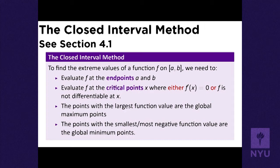Let's remember the methods we have for doing these things. In section 4.1, we learned about the closed interval method. If you have a function defined on a closed and bounded interval [A, B], we need to check the endpoints A and B and the critical points — places where the derivative is zero or does not exist. Then plug all those points into the function, find the largest value for the maximum and the smallest for the minimum.